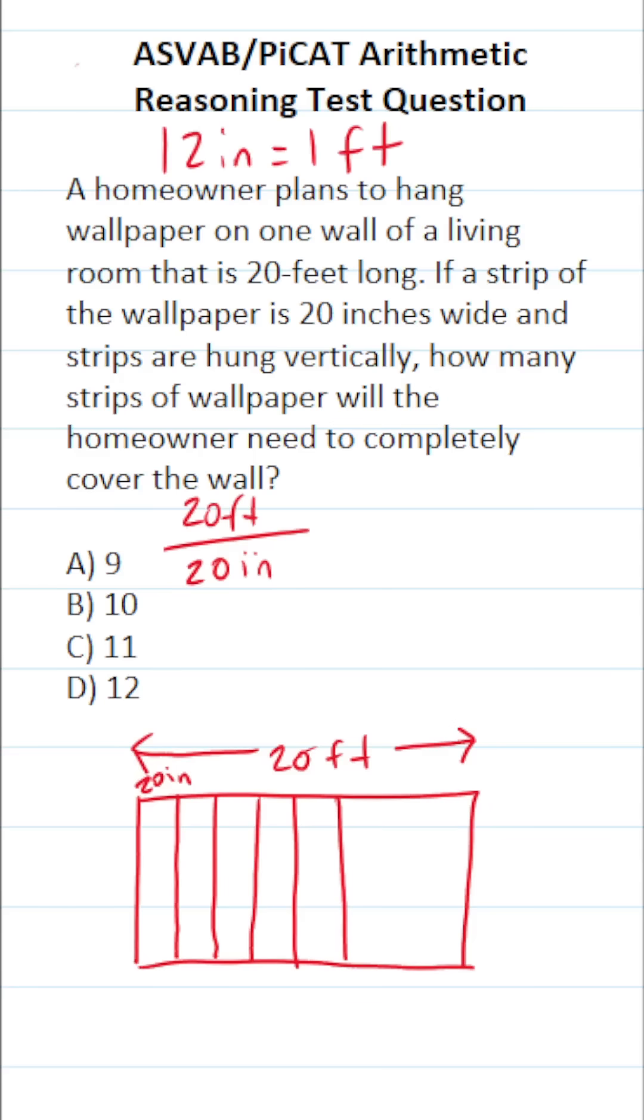So in this case, I'm going to quickly convert 20 feet to be in terms of inches. This becomes 20 times 12. 0 times 2 is 0, 2 times 2 is 4, add a 0 placeholder. 1 times 0 is 0, 2 times 1 is 2, add this up. This is 240.